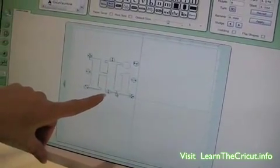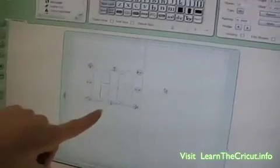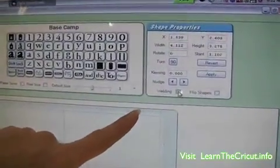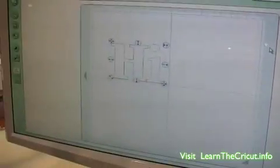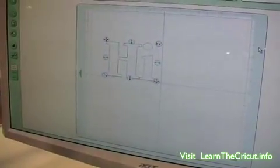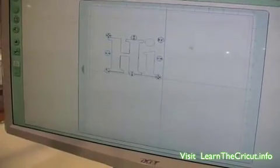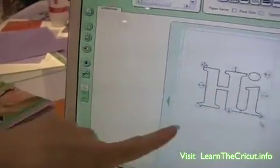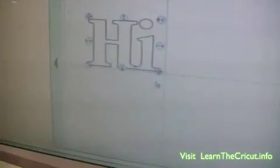You'll notice that these two letters are now overlapping. With them overlapping I go back up to my shape properties key and select the weld key. What this is going to do is weld these two letters together and give me one cut. We can preview it simply by pressing the I and you can see that's the cut that I'm going to be getting.